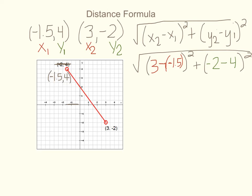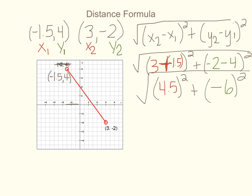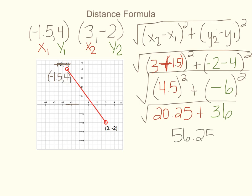Let's solve. Minus a negative becomes a plus, so three plus one point five is four point five, and that's squared. Negative two minus four is negative six, and that's squared — the whole thing is square rooted. Four point five squared is twenty point two five, and negative six squared is positive thirty-six. Twenty point two five plus thirty-six is fifty-six point two five, and the square root of that equals seven point five. So we get the same answer for the distance of this line: seven point five units.